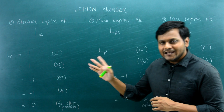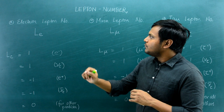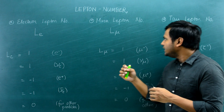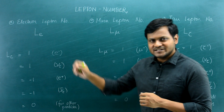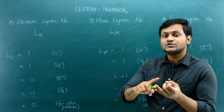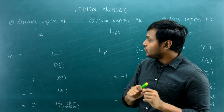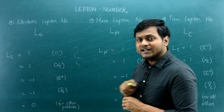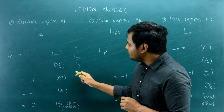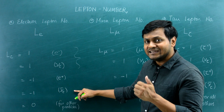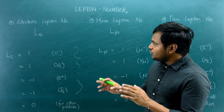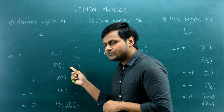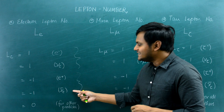I have three numbers: the electron lepton number associated with the electron family, the muon lepton number associated with the muon family, and the tau lepton number associated with the tau family — each distinct from one another. We can associate values of +1, −1, or 0 for all particles. The electron lepton number has a value of +1 for the electron and the electron neutrino, −1 for the anti-electron and the anti-electron neutrino, and 0 for all other particles.